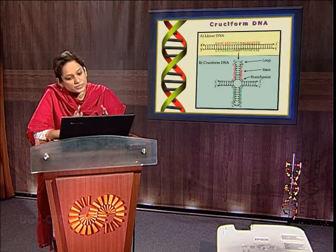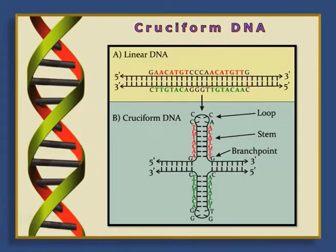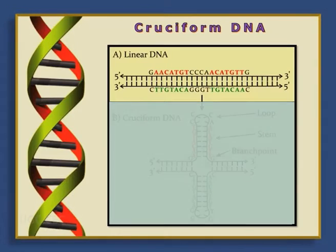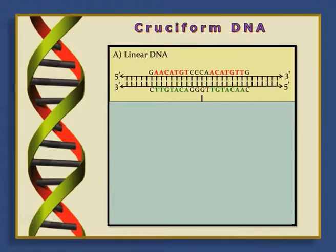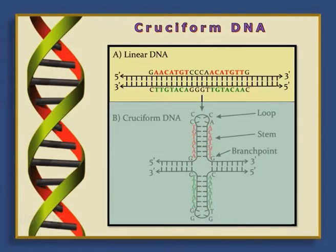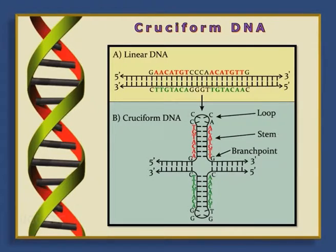Let's start with the cruciform DNA. The cruciform DNA, as you can see, is a cross-shaped structure — when the DNA becomes cross-shaped in nature. It is formed due to the presence of palindromic sequences. Palindromic sequences are those sequences that read the same from the forward or backward direction. Due to the presence of complementary strands within the same strand (intra-strand), there is a formation of hydrogen bonds intra-strand and a disruption of inter-strand hydrogen bonding. The cruciform DNA consists of a stem and a loop structure — the loop denotes unpaired bases and the stem is where the hydrogen-bonded bases are present.